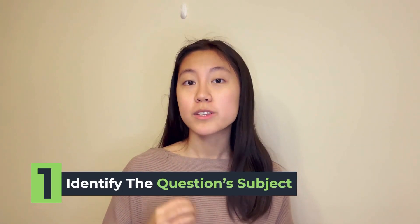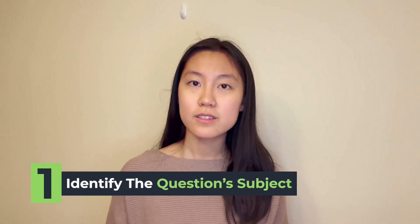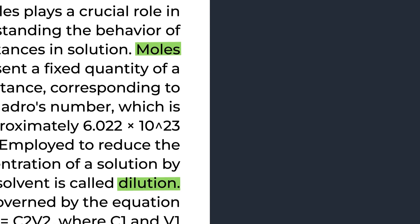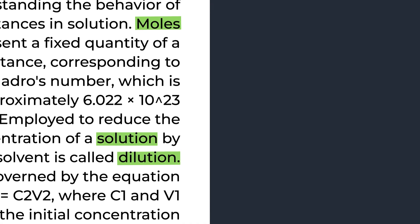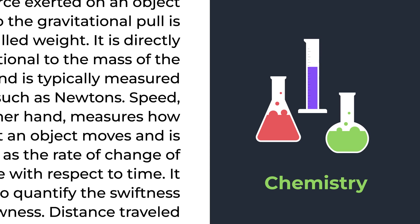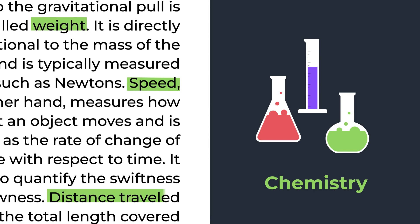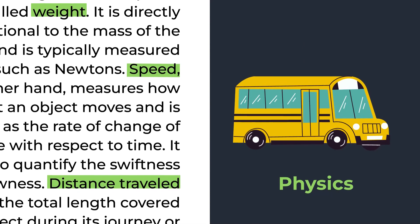Once you have a solid understanding of the formulas themselves, let's talk about the steps to dissect a CP question. When you're first presented with a question, you want to make sure you understand what subject the question is testing you on. Take a brief look at the question stem and get a general feel for the subject. For instance, if you see words like moles, dilution, or solutions, it's probably about chemistry. On the other hand, if you see things like weight, speed, or distance traveled, it's probably related to physics.